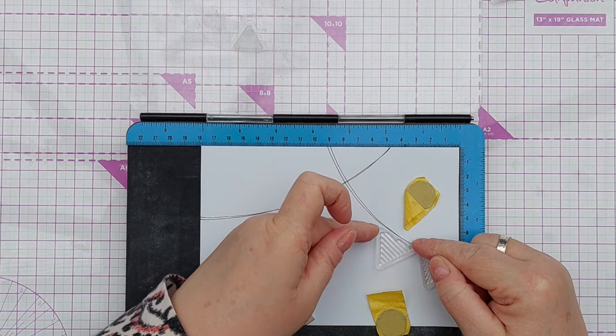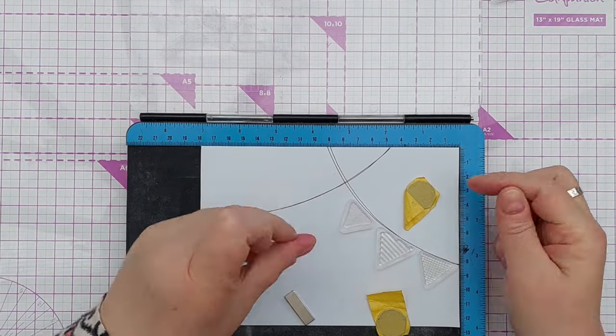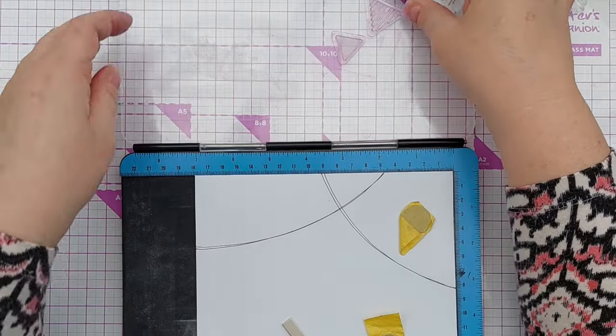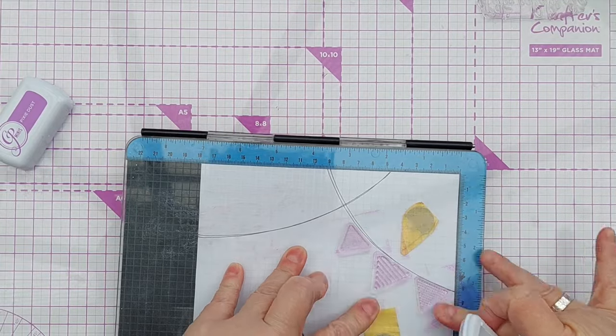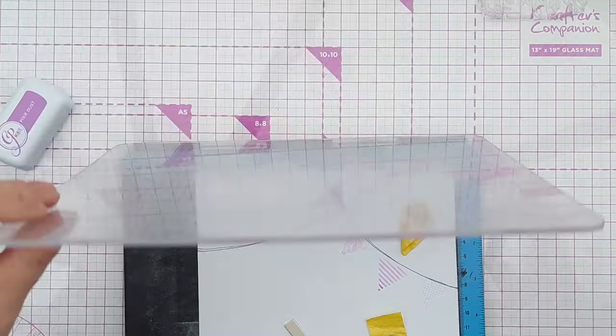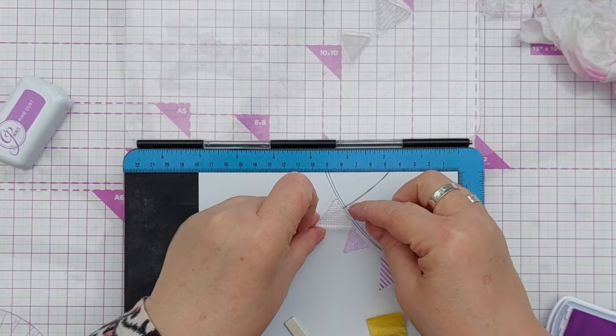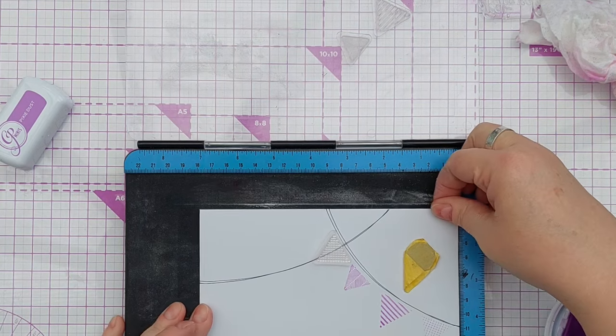I'm going to use Pixie Dust to stamp these three here. Take that and rotate it. I might have to shuffle this down a bit, get away from the edge.